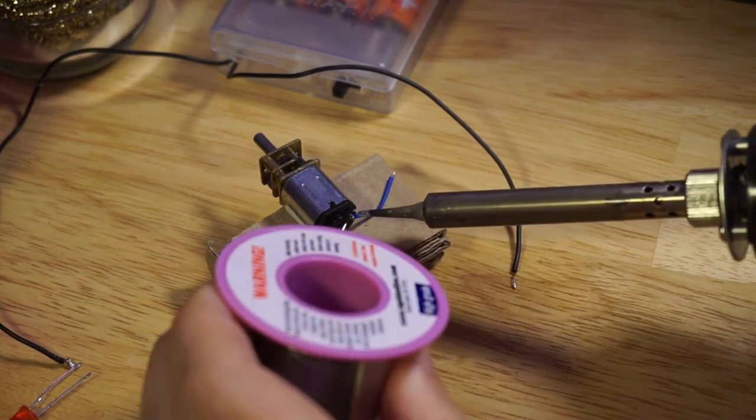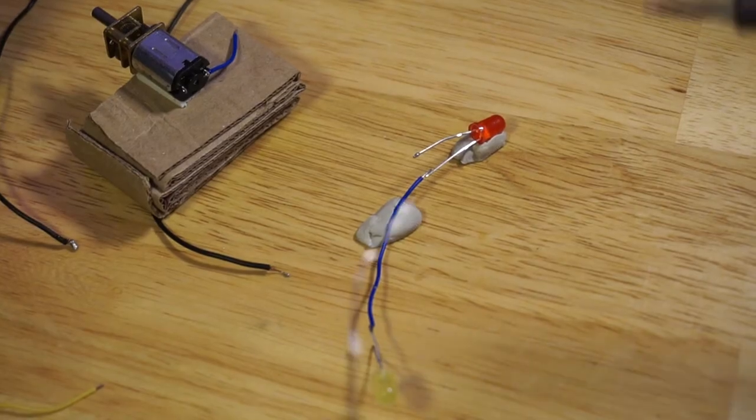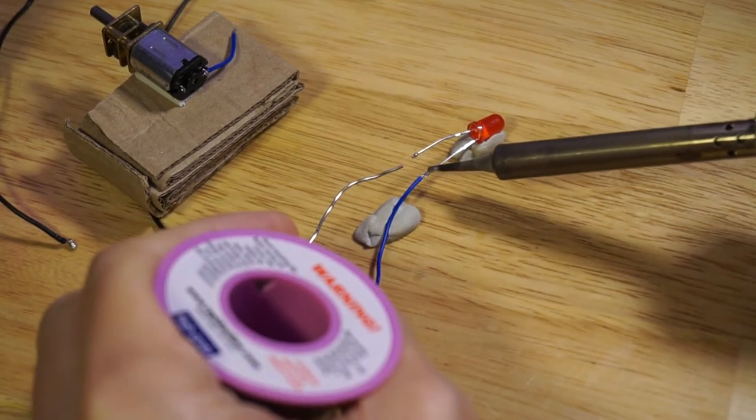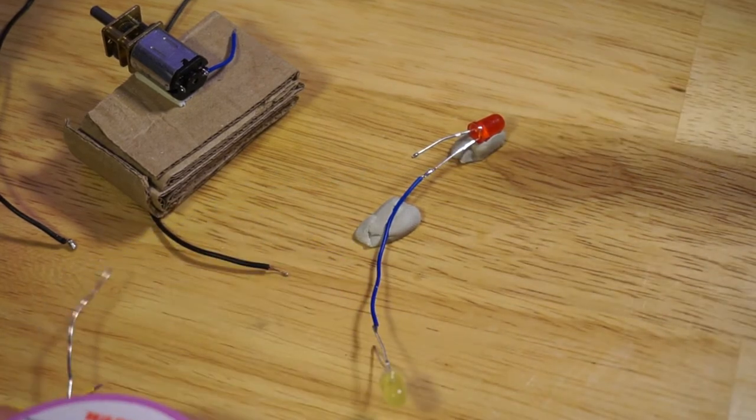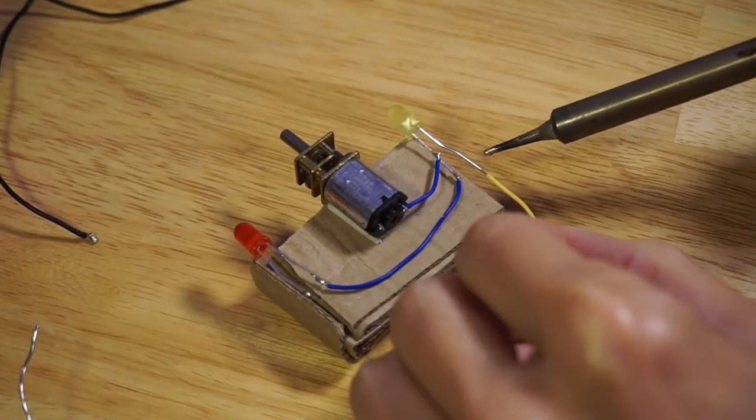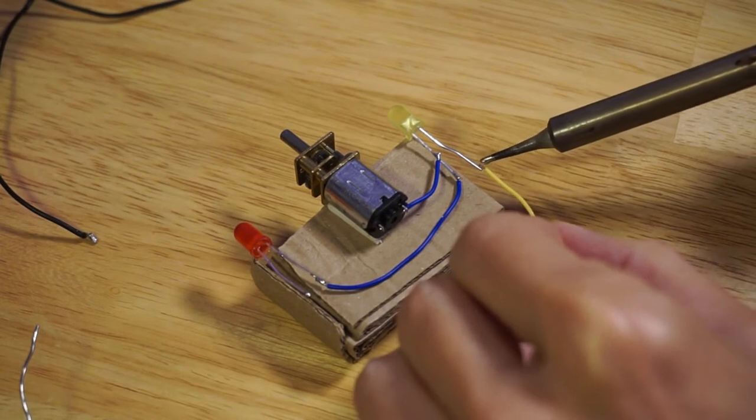I soldered the cathodes of the two LEDs together with a connecting wire. And then soldered the cathode of one LED to one of the terminals on the DC motor.